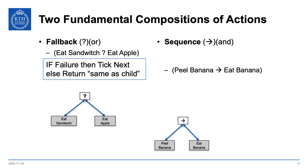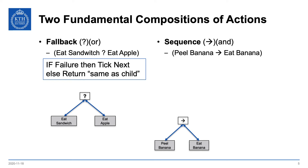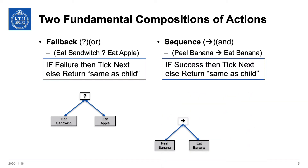The sequence on the other hand — here we have an example to peel the banana and eat the banana. Clearly it's not an OR here, it's more of an AND situation: you want to peel the banana and then eat the banana. The corresponding rule: if you have a success you tick the next child, else you return the same as the child. So the rule inside this rectangle is exactly the same but with failure and success swapped. It's only if you succeed in peeling the banana that you want to eat the banana. If you're running then you keep running, trying to peel the banana. If you failed in peeling the banana, most people would not try to eat the banana.